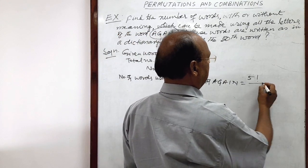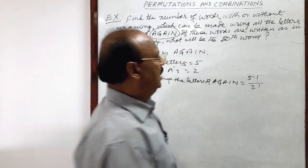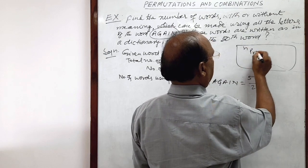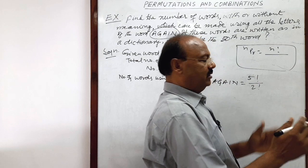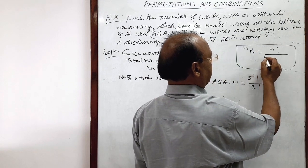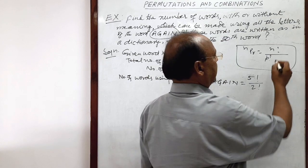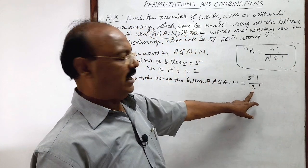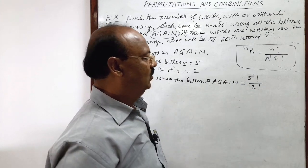But there is a repetition of A twice. This will be 5 factorial divided by 2 factorial. Here we are using the formula, NPR is equal to N factorial by, if there is some repetition, one object is repeated P times then P factorial, repeated Q times then Q factorial and so on. So here A is being repeated two times, so this denominator is 2 factorial, we divide by 2 factorial.